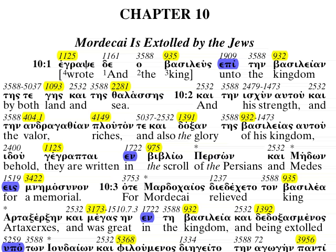Welcome to the tenth chapter of Esther, the last chapter. It's a short one that basically sums up what has happened and the results. In chapter 10, we mentioned in our headlines on the website where it has all the chapters of Esther, it would be featuring the Amphi, Ana, and Pro prepositions. It's somewhat misleading because none of these prepositions appear in this chapter, and they didn't actually appear in the book of Esther at all. We'll have to come to them later when we run across them.